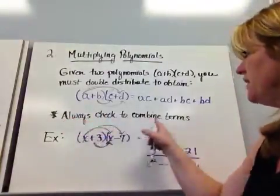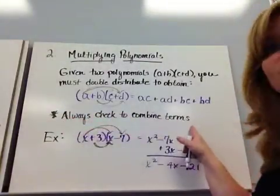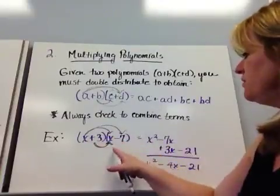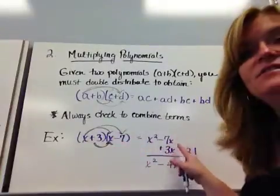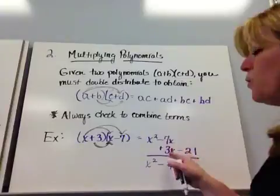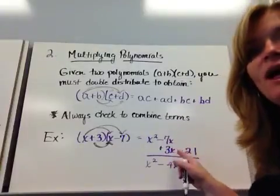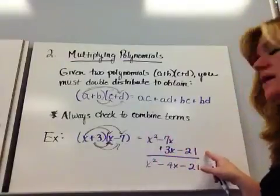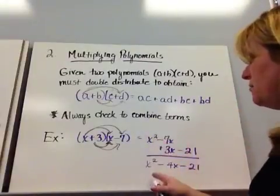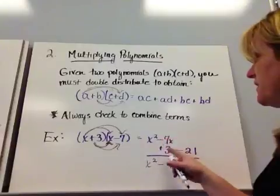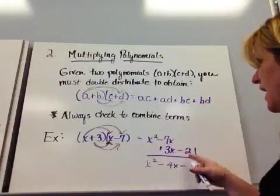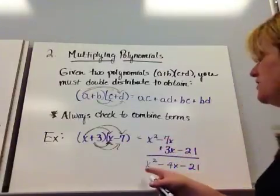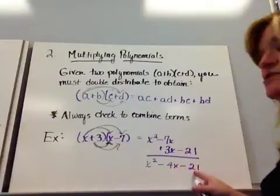and I have this little star thing here, it says always check to combine terms. If I do the 3x, I see that these two have the same variable part. So I'm going to make it easy on myself and put them in a column because I know I can combine them. And now I can do 3 times negative 7, I get the negative 21. I draw this line, I add them up. x squared, negative 7x plus 3x is negative 4x, and nothing goes to the negative 21. So I end up with x squared minus 4x minus 21.